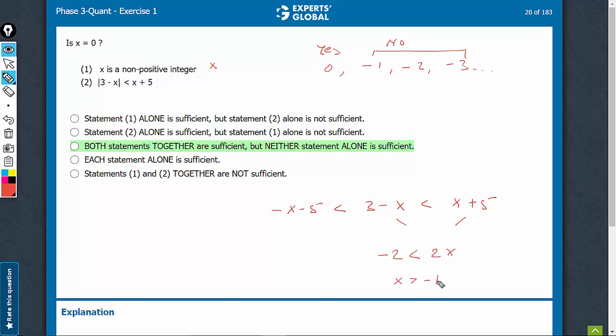x is greater than minus 1, but it doesn't have to be 0. It may be 0. So, once again, we have a maybe scenario. So, statement 2 is also not sufficient.